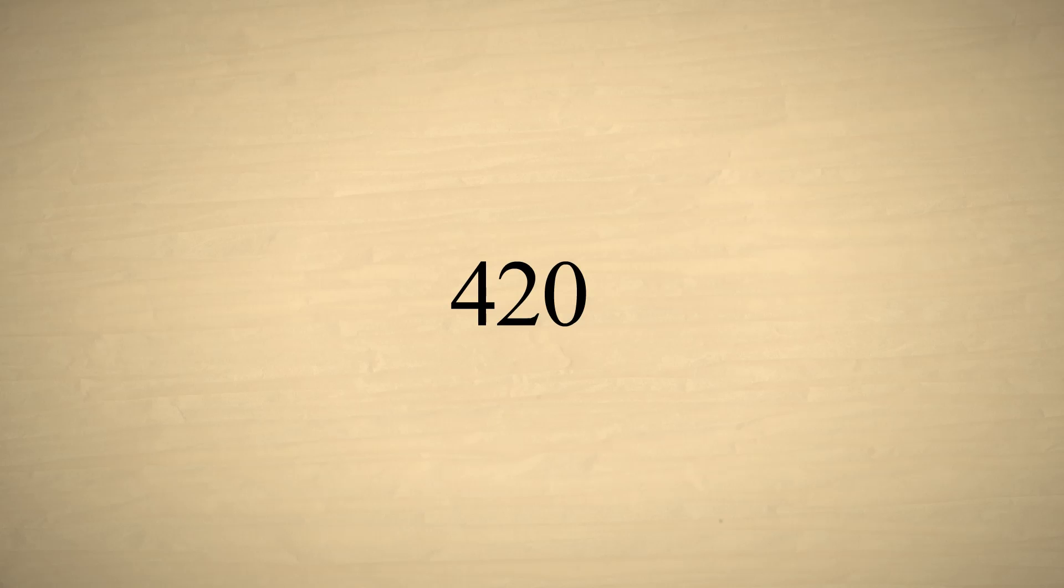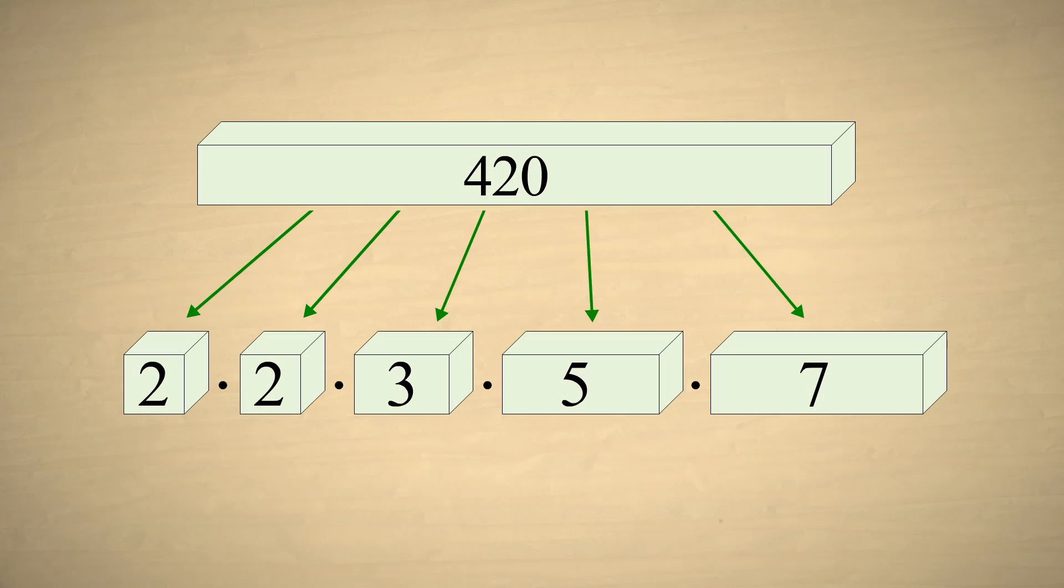Take as an example 420, which is the product of the prime numbers 2, 2, 3, 5, and 7. We can think of these factors as the elementary building blocks of 420.